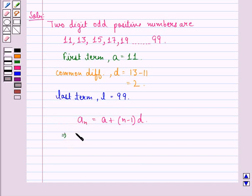This implies that 99 is equal to 11 plus (n-1) into 2. This implies 99 minus 11 is equal to 2 into (n-1).